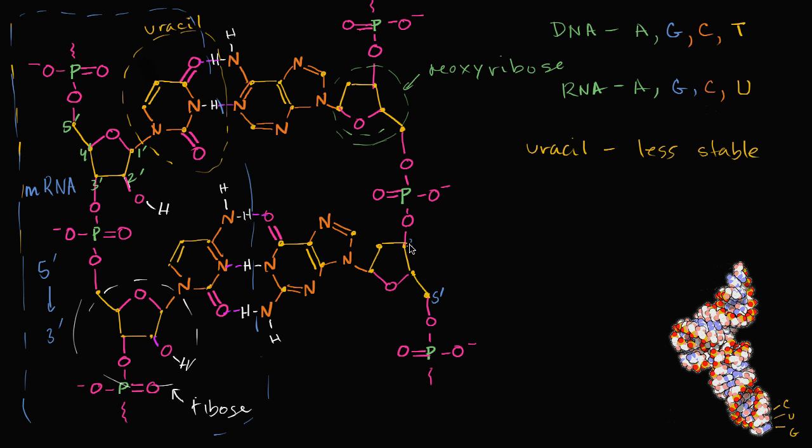While this DNA molecule is oriented the other way. This is a five prime carbon, this is a three prime carbon. So we have phosphate, three prime, five prime, phosphate. So we have three prime is on top, and five prime is on the bottom.